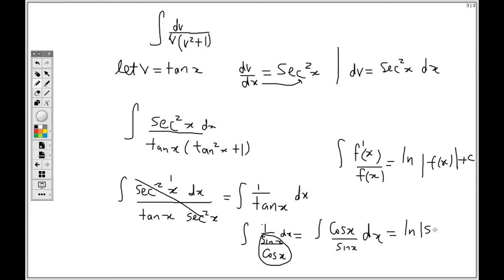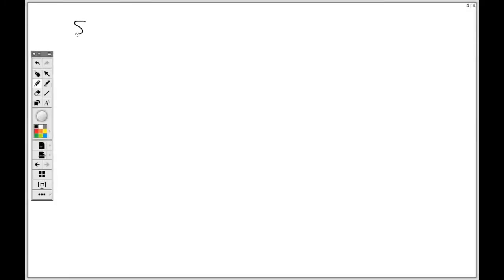However, remember I had substituted the letter v with a trig function. So this is not the final answer, but I need to go further. Since v is equal to tan x, I cannot forget that I have expressed that tan x represents v. Then I have to use this information to find out what is sin x.